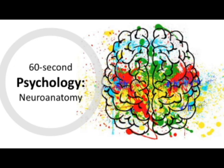Neuroanatomy refers to the structure of the brain and nervous system. One of the main theories in this area is the concept of localisation of brain function — the idea that different parts of the brain control different aspects of behaviour. For example, the motor cortex controls voluntary movement, the somatosensory cortex processes sensory information such as touch and smell, and the visual area processes visual information.